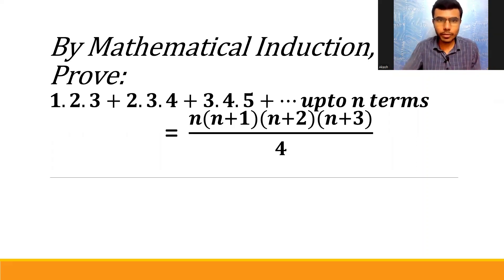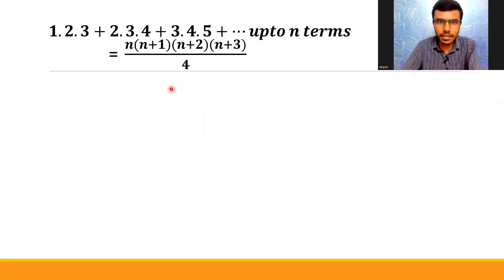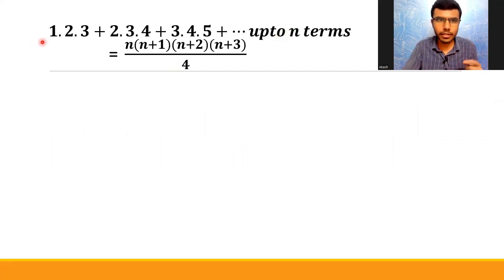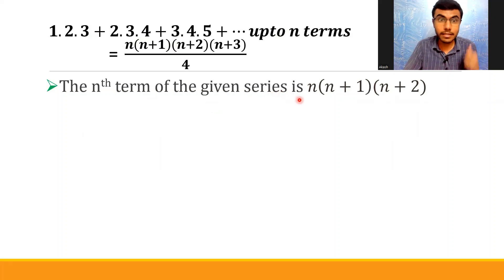Now let's see how to prove this statement or formula with the help of mathematical induction. First, if you observe, the nth term is not given for the series on the left-hand side. The nth term is not given — I need to find that out. The nth term of the given series is n(n+1)(n+2).